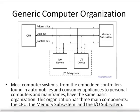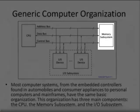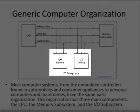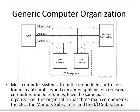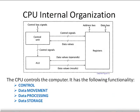Generically, if we look at computer organization, there are three main parts: the CPU, the memory subsystem, and the I/O subsystem. This is true whether we're talking about cruise control systems in automobiles, a microwave as a consumer appliance, your own personal computer, or a large mainframe in a banking organization. They all have the same basic organization — three main components: the CPU, the memory subsystem, and the I/O subsystem. So let's look at the CPU internal organization.